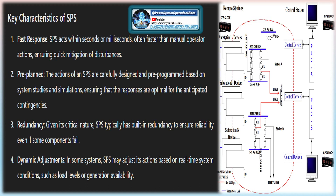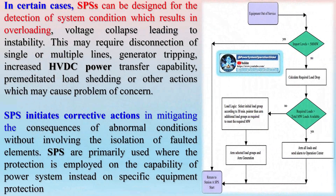SPS initiates corrective actions in mitigating consequences of abnormal conditions without involving the isolation of faulted elements. SPS are primarily used where protection is employed on the capability of the power system instead of specific equipment protection. SPS are designed to take special action in response to event disturbances such as transmission faults, cascading outage of lines, generator outages, sudden large load changeovers, and HVDC pole blocking.